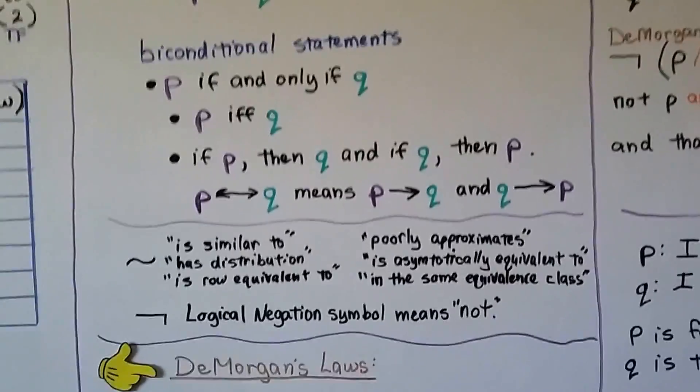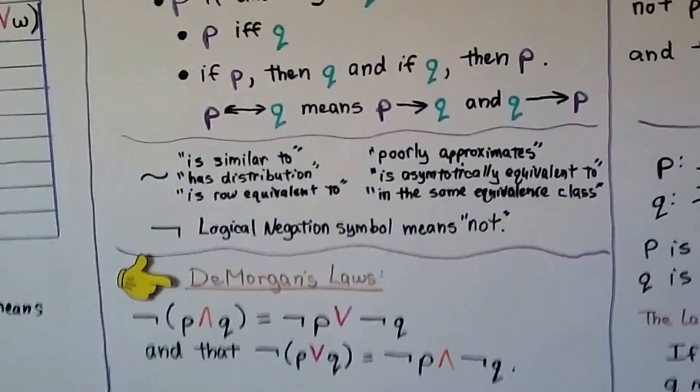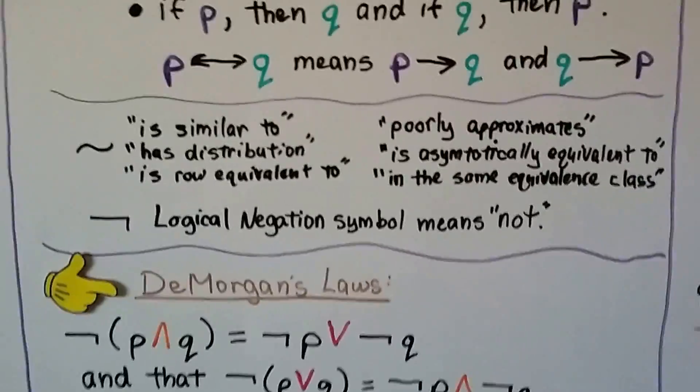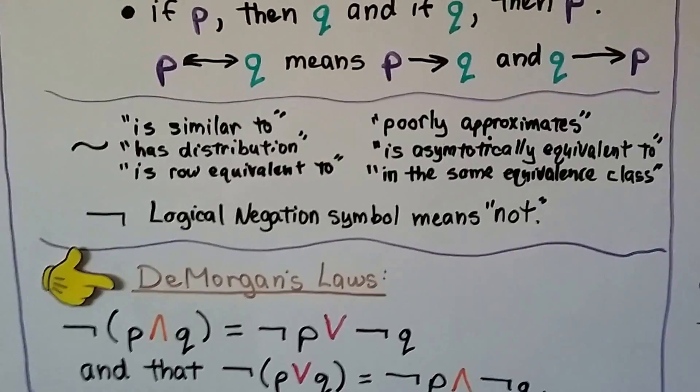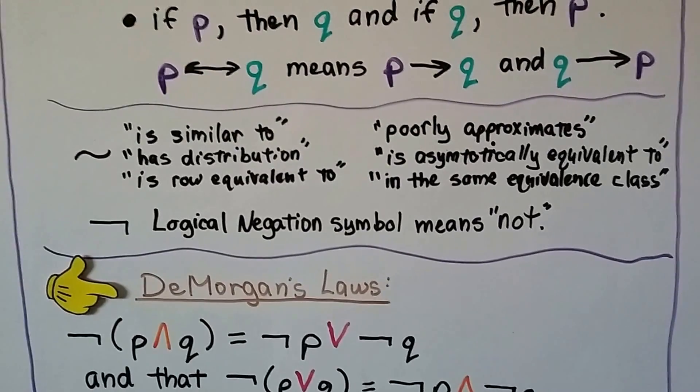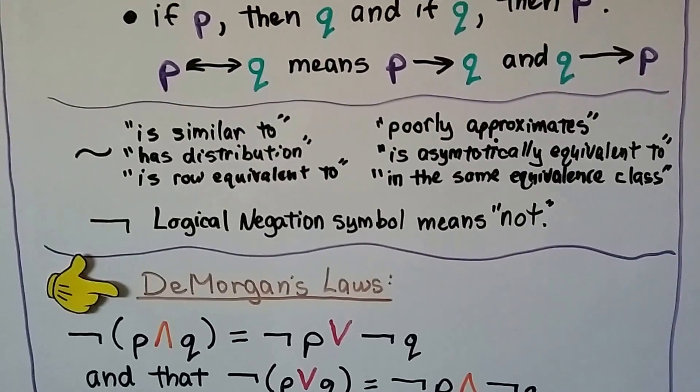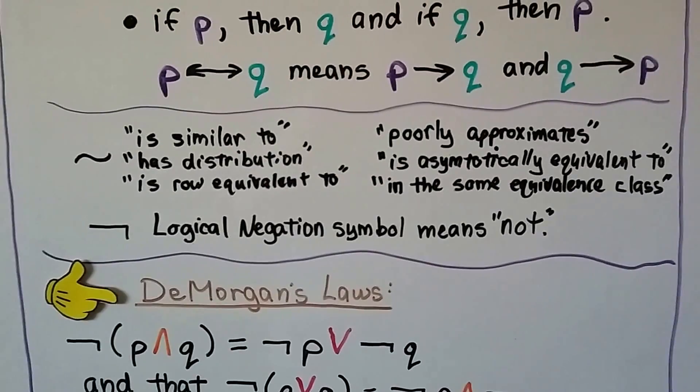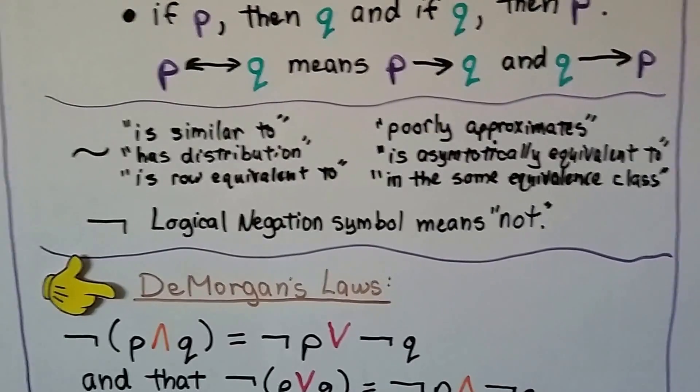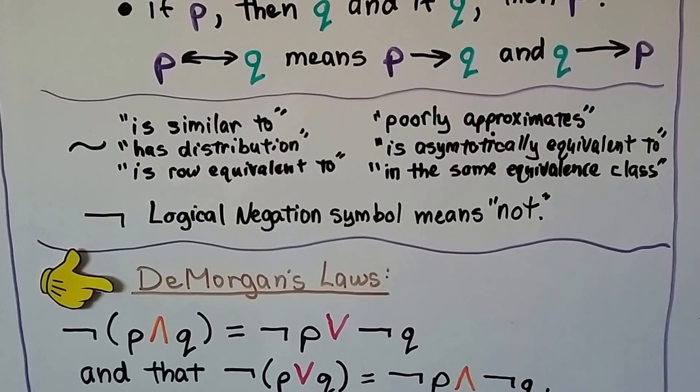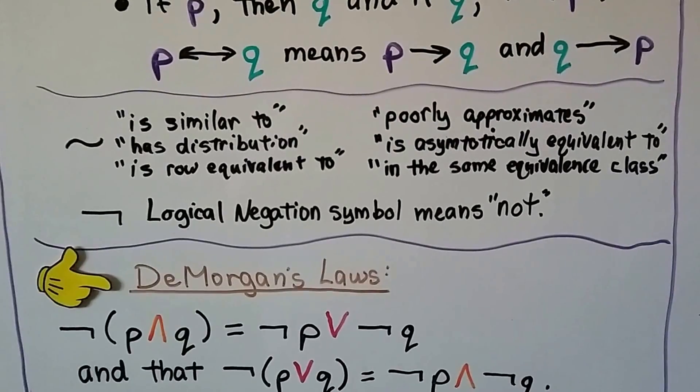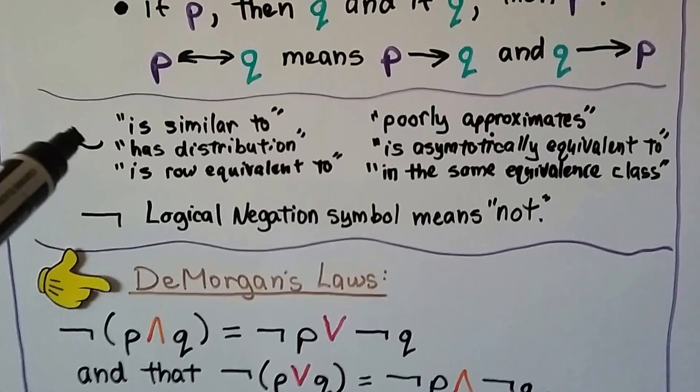So now let's get into this funny symbol I'm using for NOT. A lot of you have in your textbook this symbol for NOT. And what it means is similar to, has distribution, is row equivalent to for like matrices, poorly approximates, is asymptotically equivalent to, it also means in the same equivalence class. So it can mean NOT.